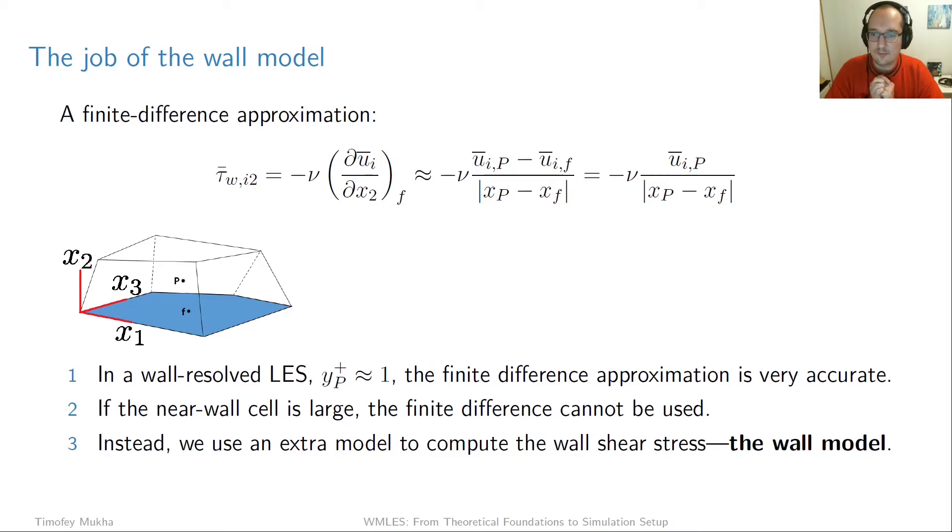So how do we deal with computing this wall shear stress? Well the most straightforward approach is simply take a finite difference. So what do we do then? We take the difference between the velocity at the cell center and the velocity at the face center and divide by the distance between the two, right? This is a first order approximation using a finite difference. Moreover since the velocity at the wall is actually zero due to no slip, this is going to disappear. So the only thing which is left is minus nu times the velocity at the cell center divided by the distance to the wall.